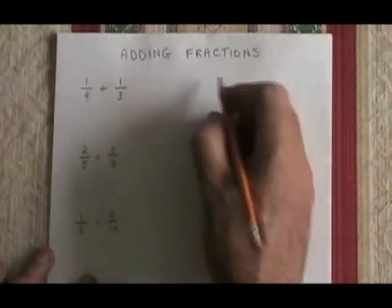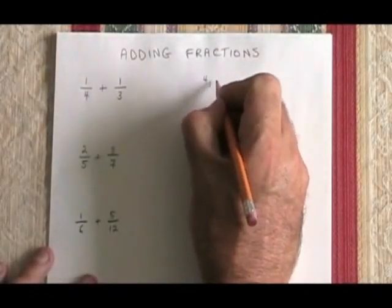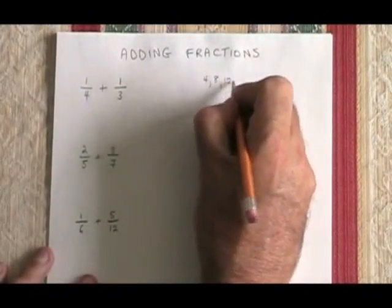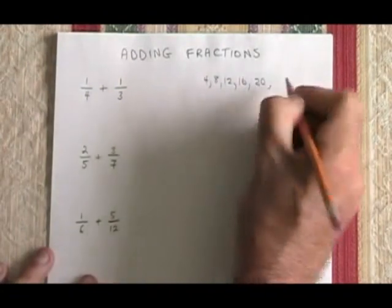Here we have a 4 and a 3, so I'm going to list their multiples. 4's multiples are 4, 8, 12, 16, 20, and it keeps going.